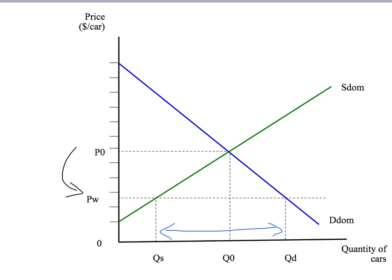Now, most students don't have trouble with the idea that domestic consumers will only pay P w. After all, why will any domestic consumer pay more than the world price? They can buy as many cars as they like at the world price. But it's not quite as obvious why domestic producers have to drop their price down to the world price.